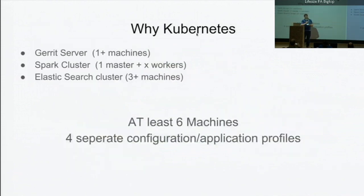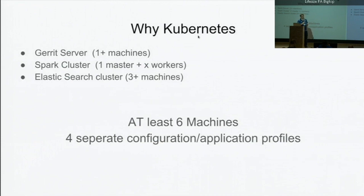But what would it have taken to actually get there? It would have taken a Gert server, which is at least one machine if not two or three, a Spark cluster with a master and all its workers, and then an Elasticsearch cluster to store that data in and run Kibana on — so that's another three or more machines. So at least six, if not eight or ten machines with different profiles and configurations, and you know how that story goes. It's one server at a time: configure, configure, configure.